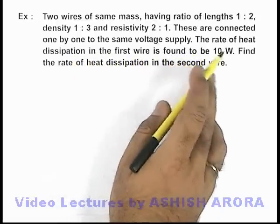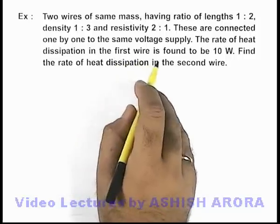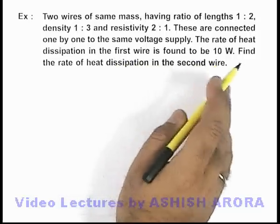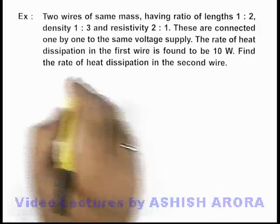It is given that the rate of heat dissipation in the first wire is found to be 10 watt, and we are required to find the rate of heat dissipation in the second wire.